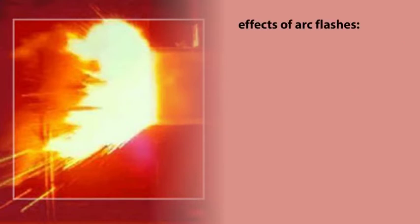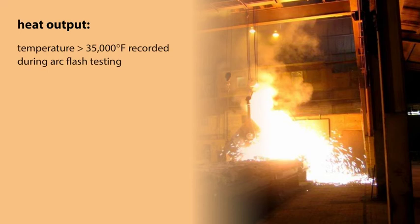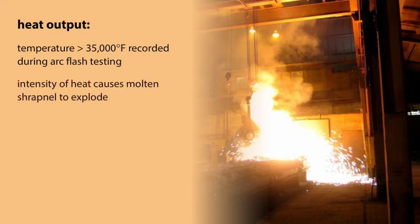The effects include heat output, thermal radiation, and pressure wave. First is heat output. Temperatures in excess of 35,000 degrees Fahrenheit—several times hotter than the Sun, which is 10,000 degrees Fahrenheit—have been recorded during arc flash testing. The intensity of the heat in the blast can melt metal, causing molten shrapnel to explode into the area surrounding the blast.